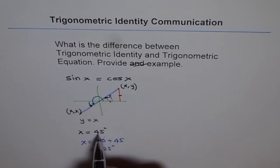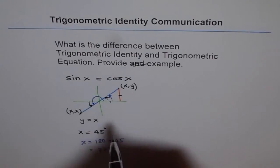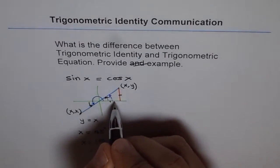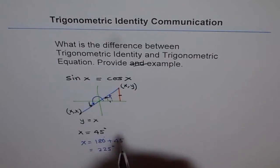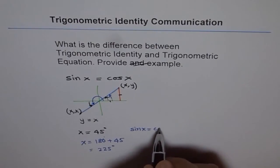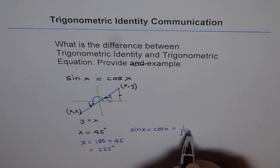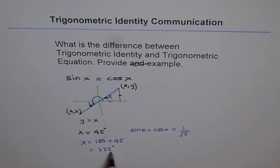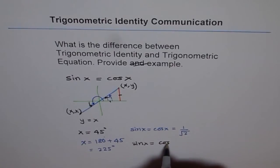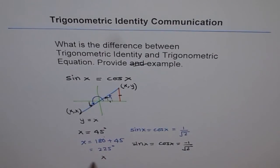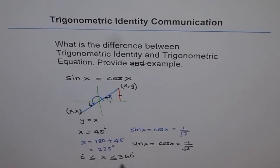If x equals 45 degrees, then sin x equals cos x and the value is 1 over square root 2. But if x is 225 degrees, that means x is in quadrant 3, then sin x equals cos x and the value is minus 1 over square root 2. So if we say x is greater than or equal to 0 but less than or equal to 360 degrees, then in this domain sin x equals cos x for two angles: 45 degrees and 225 degrees.